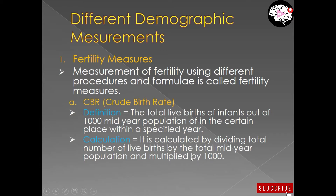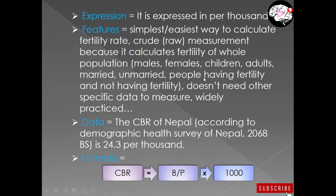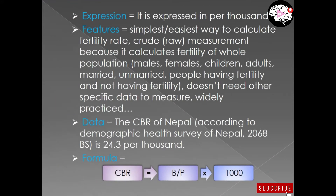How is CBR expressed? It is expressed in per thousand. Why per thousand? Because we multiply by one thousand in the formula — we are measuring among a thousand mid-year population. Just as percentage is expressed in per hundred, CBR is expressed in per thousand.